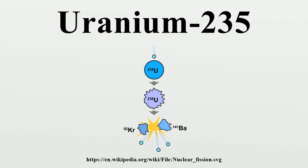The Little Boy gun-type atomic bomb dropped on Hiroshima on August 6, 1945 was made of highly enriched uranium with a large tamper. The nominal spherical critical mass for an untampered U-235 nuclear weapon is 56 kilograms, a sphere 17.32 centimeters in diameter. The required material must be 85% or more of U-235 and is known as weapons-grade uranium, though for a crude, inefficient weapon 20% is sufficient. Even lower enrichment can be used, but then the required critical mass rapidly increases.